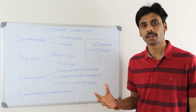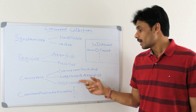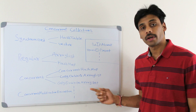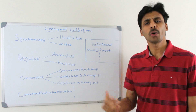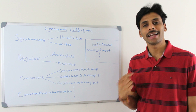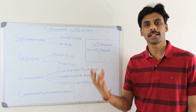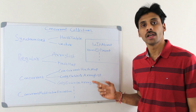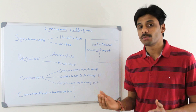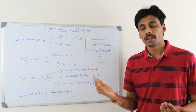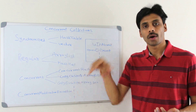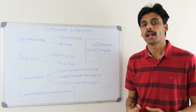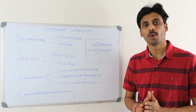I will go into the details of lock stripping later. CopyOnWriteArrayList and CopyOnWriteArraySet, on the other hand, keep cloning the collection every time a write is made. So if one thread is iterating through a CopyOnWriteArrayList and another thread is modifying it, whenever a modification happens a clone or copy of the entire list is created.